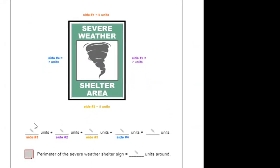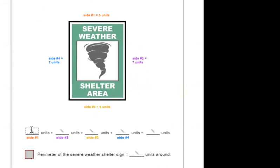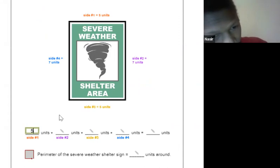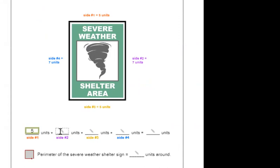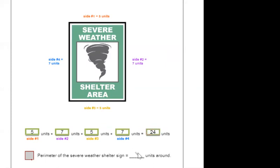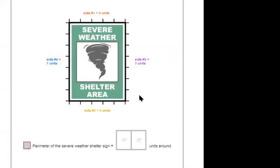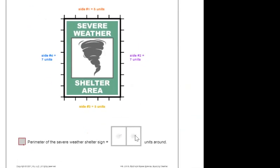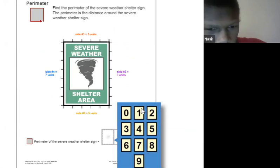So again, side number one is 5, side number two is 7, side number three is 5, and side number four is 7. So what's our perimeter? 24. Good job, you guys! 5 plus 7 plus 5 plus 7 equals 24.